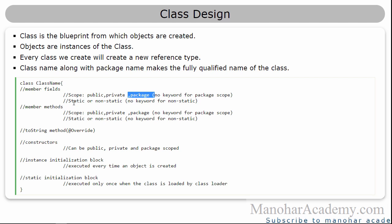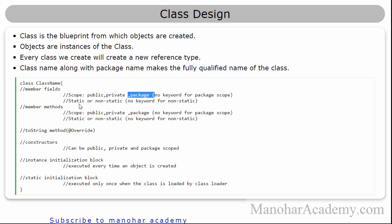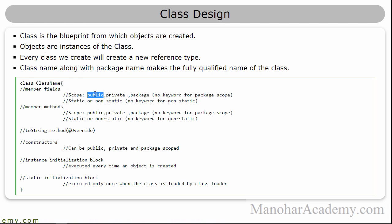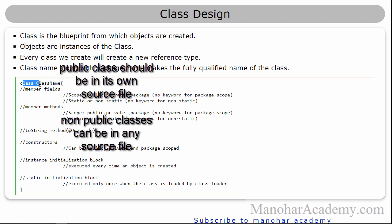Member fields can be static or non-static. If it is static it is a shared one; if it is non-static it is at the object level and not shared across objects. To make something static we use the keyword static; if we don't, it is non-static. Not only fields — methods also can have the three scopes: public, private, and package, and they also can be static or non-static. The class itself can be either public or package scope; it can't be private scoped. Every public class should be in its own file, and non-public classes can be in any package.